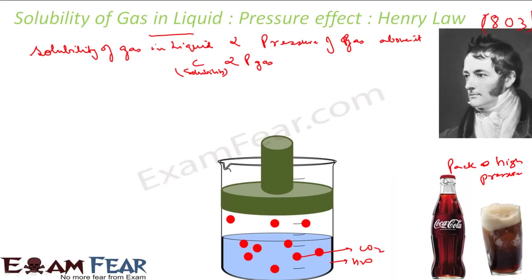The moment you open the bottle, the pressure changes to atmospheric pressure. The solvent is no longer able to hold the carbon dioxide, and it comes out. That is Henry's Law: solubility is directly proportional to pressure. He gave the constant as C = K × P_gas.